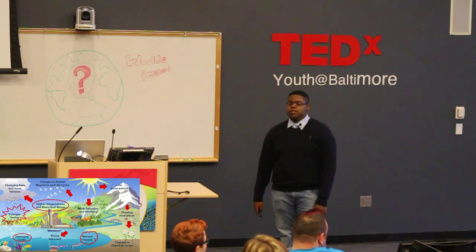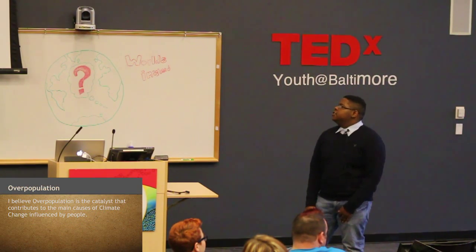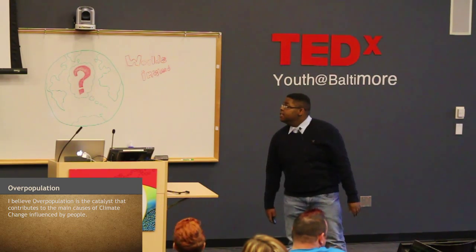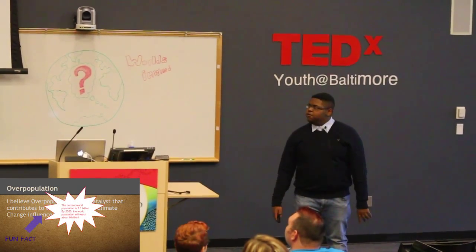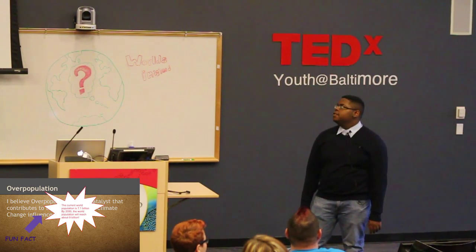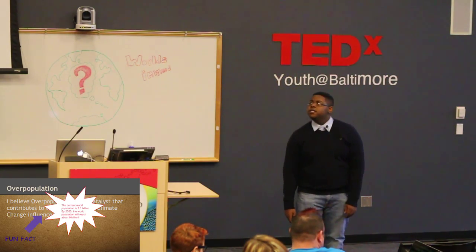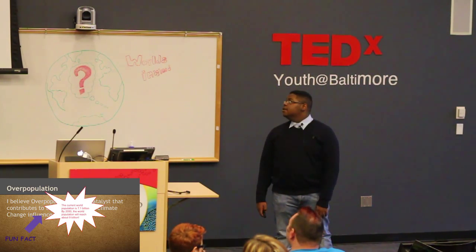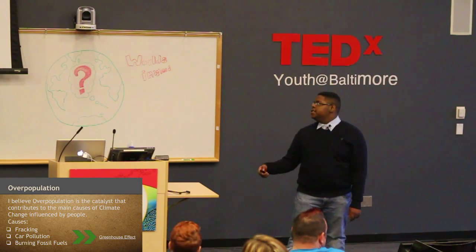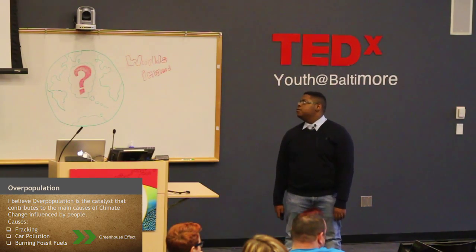Overpopulation. I believe overpopulation is a catalyst that contributes to the main cause of climate change influenced by people. Here's a fun fact, but not really so fun: the current world population is 7.1 billion. By 2050, the world population will reach about 9 billion, which is a lot. The main causes of climate change due to overpopulation are fracking, coal pollution, and burning fossil fuels.